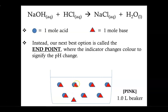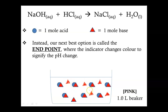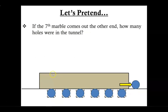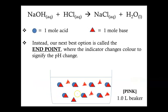A faint pink color indicates that you are only weakly basic, so you've only overshot the neutral point by a little bit. If you ended the titration at a very, very dark pink color, then you've made the solution very basic and added in way too many bases. At that point you'd be overestimating how much base you used and therefore overestimating how much acid was originally inside your beaker. It would be like overshooting with 20 marbles and saying there must have been 19 holes — we only want one marble to come out, not 19 others, otherwise we overestimate the number of holes in the tunnel, or the amount of acid originally in my solution.